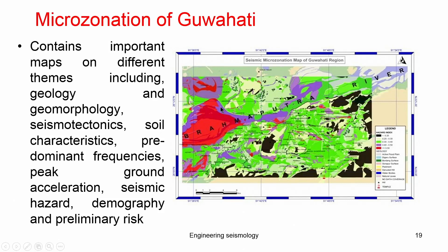The hazard index depends on the weightage assigned to each microzonation parameter such as bedrock hazard value, geology, geotechnical data, amplification, liquefaction, landslide, and tsunami. Based on the density of data and the velocity values obtained, these hazard values are derived. One must note that the interpretation of microzonation hazard values may differ between cities — for example, a value of 0.5 in Sikkim, 0.5 in Guwahati, and 0.5 in Delhi represent different levels of exposure relative to each region's parameters.